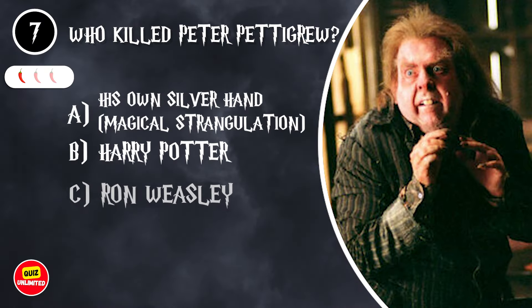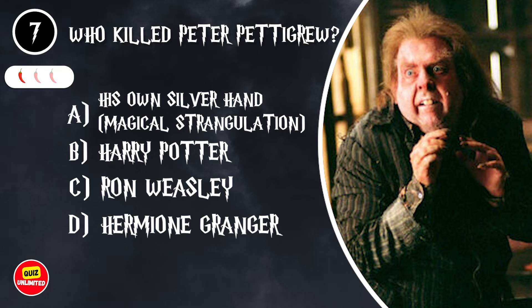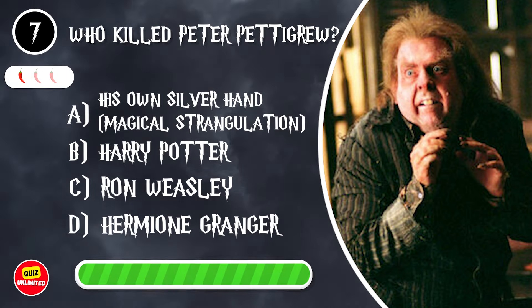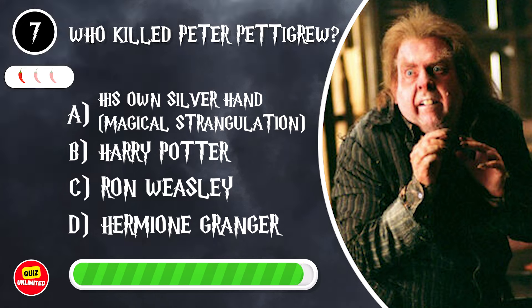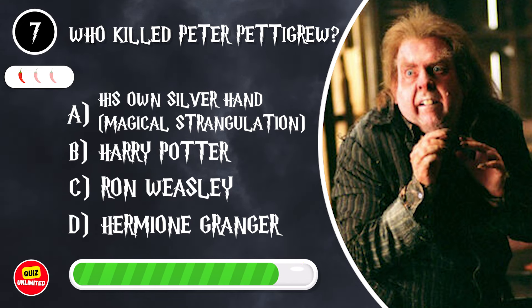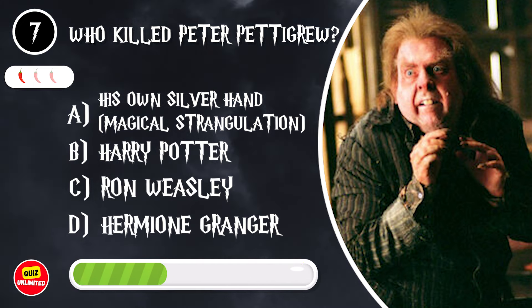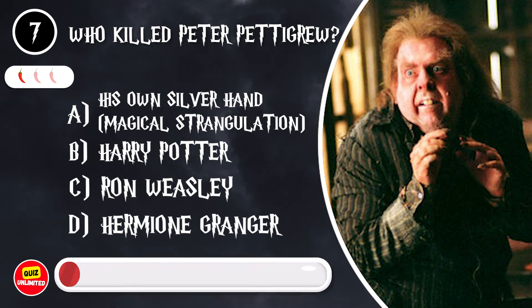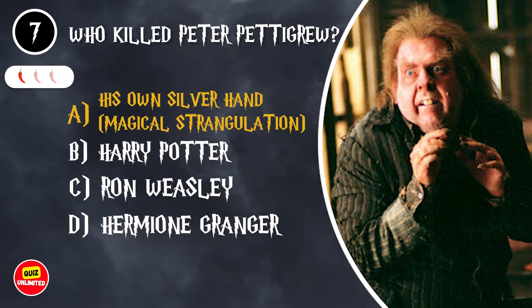Who killed Peter Pettigrew? A. His own silver hand — magical strangulation. B. Harry Potter. C. Ron Weasley. D. Hermione Granger. It's A. His own silver hand — magical strangulation.